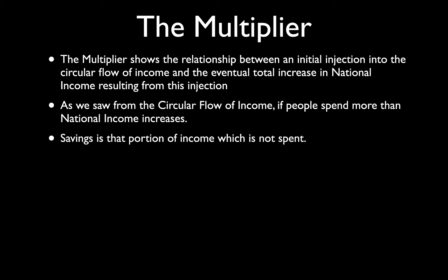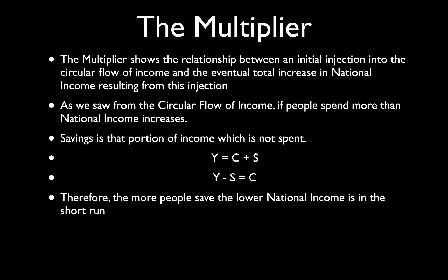Savings is defined as that portion of income which is not spent. Your income gives you two choices: you can spend it or save it. At the national level, national spending equals national income minus national savings. Therefore, the more people save, the lower national income is in the short run. We know this because savings is a leakage in the circular flow of income.